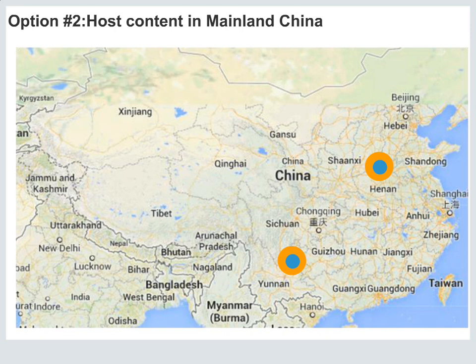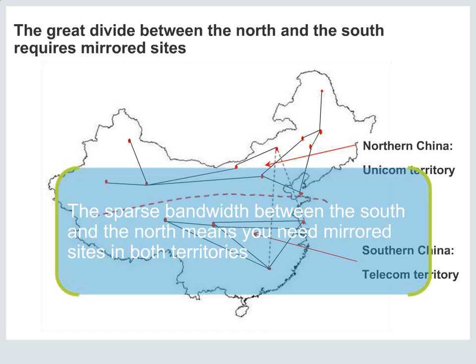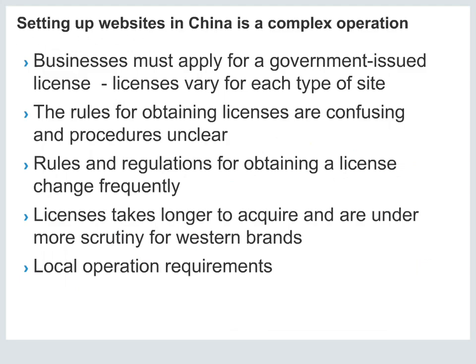Another option is to host content within mainland China. This comes with limitations: creating local partnerships, acquiring those licenses, and better understanding the local landscape, which can take years and be very expensive. You also have the issue of the northern China and southern China territories, meaning you'll have to create mirrored sites in both territories to overcome the sparse bandwidth. It's a very complex operation requiring government-issued licenses, confusing and subjective rules and regulations, and likely setting up local operations.